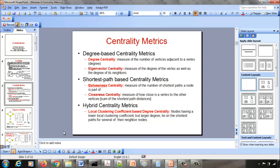Then the shortest path-based centrality metrics, in which you will see the betweenness centrality metric, where the betweenness is a measure of the number of shortest paths a vertex is part of, whereas closeness is a measure of how close a vertex is to the rest of the vertices in the network.